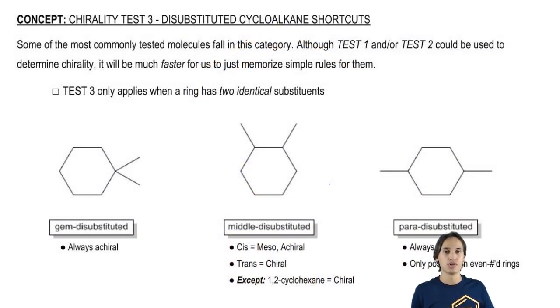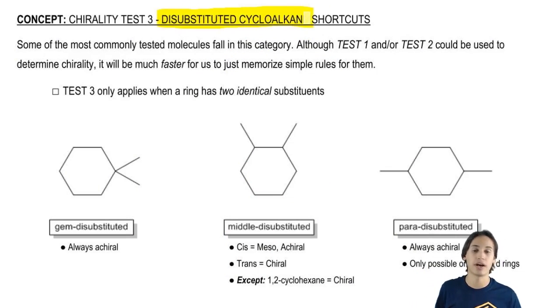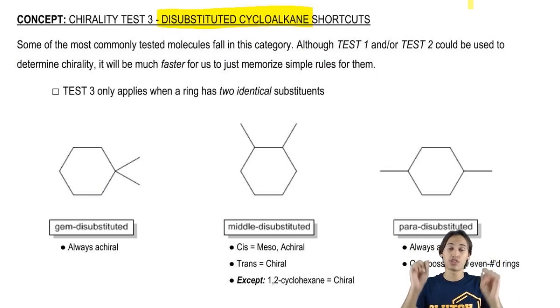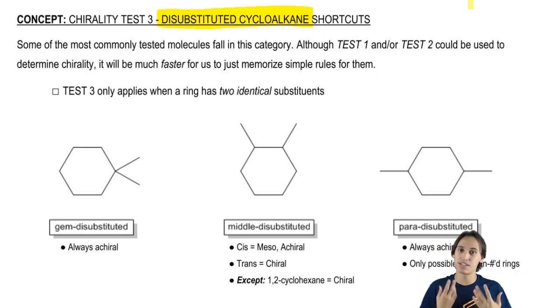It turns out that the third one is more of a shortcut than a new rule. It turns out that this third test has to do only with disubstituted cycloalkanes. What are those? That just basically means a ring that has two identical things coming off of it.